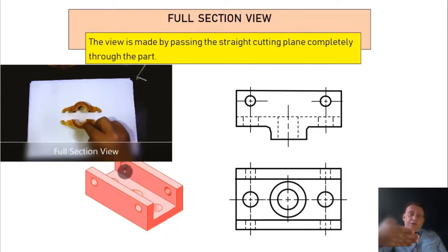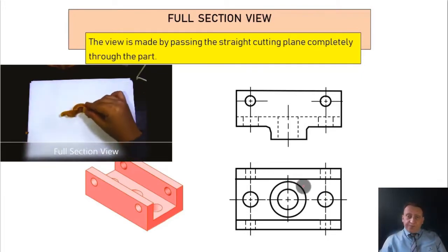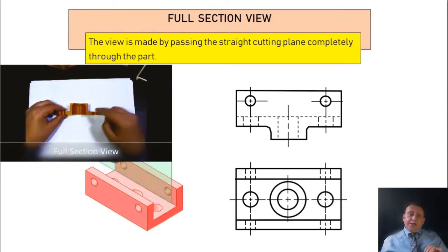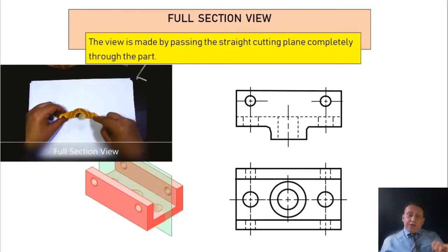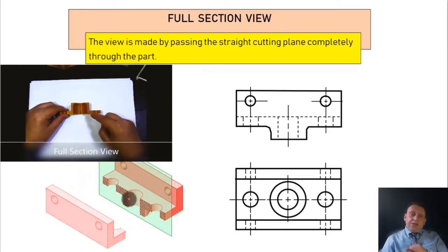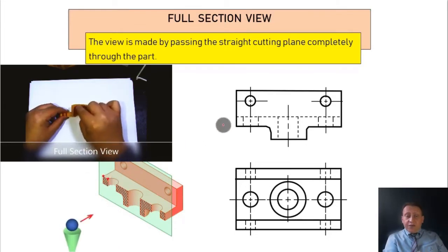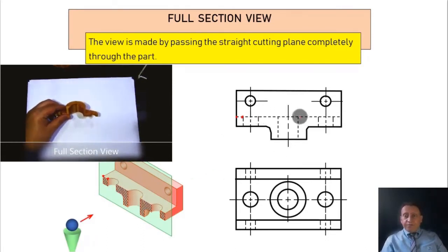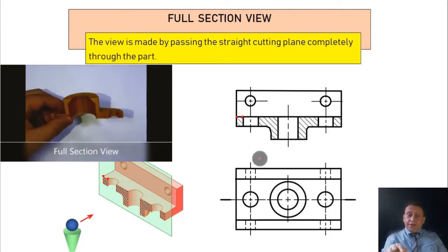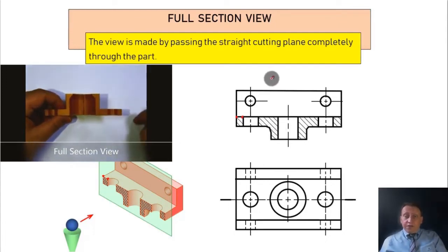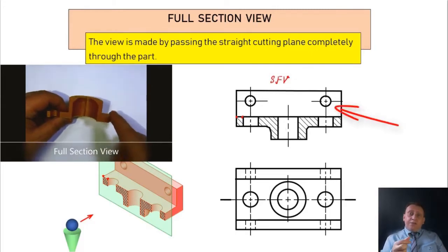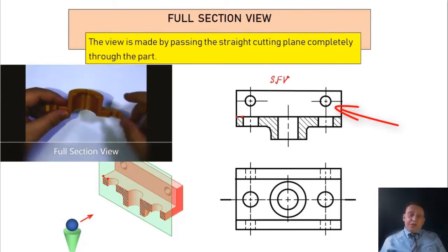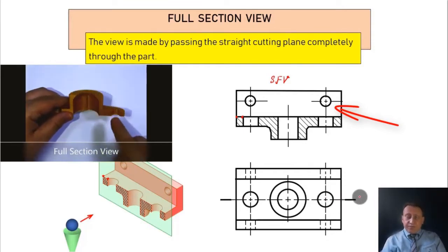When you look at the front view, you can remove one part and look inside. The example shows we did the full section view by adding a cutting plane line completely from the beginning of the part to the end. We literally cut the part, and now whatever we see from the middle we reflect in the front view. This replaces the front view with the section view. Don't forget to change the hidden lines to visible lines. Also note that holes are not sectioned because they were empty from the beginning — there is no material inside them.